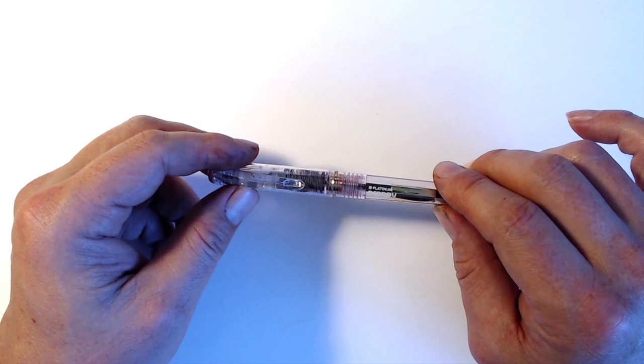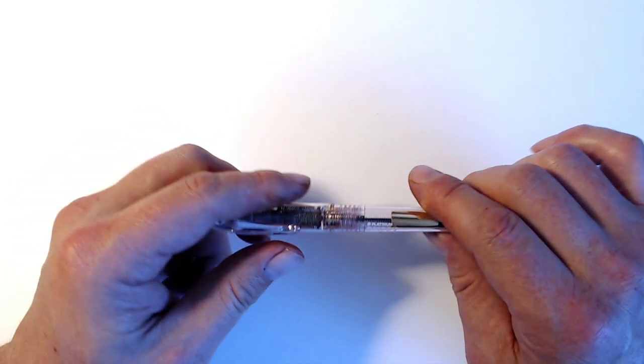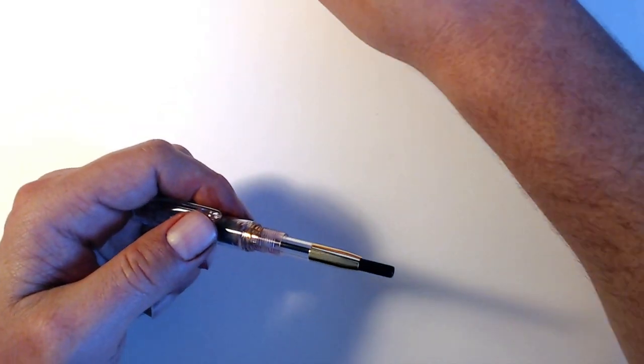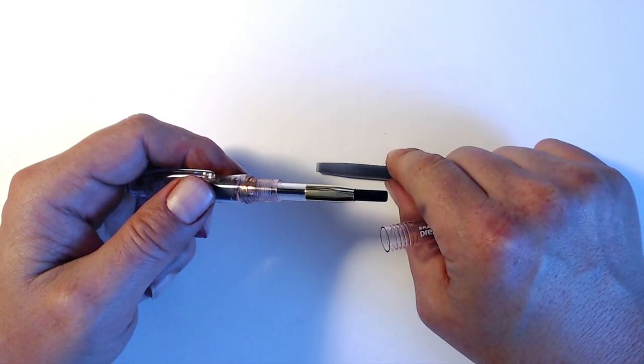Cartridge converters hold even less. Take this Platinum Preppy, for example. The converter for it holds about half a milliliter of ink. And the cartridge for it holds a little bit over one milliliter.